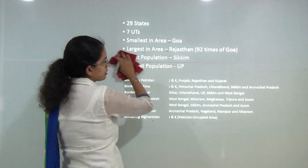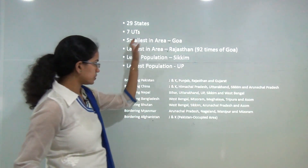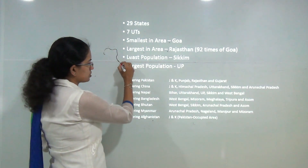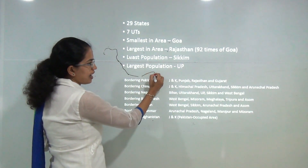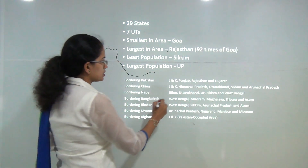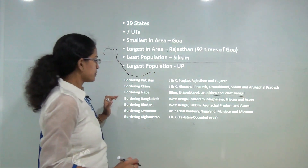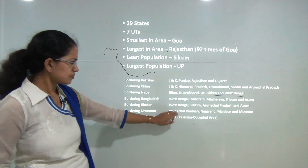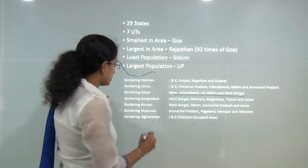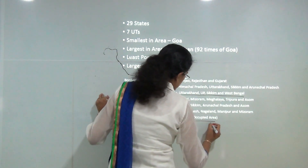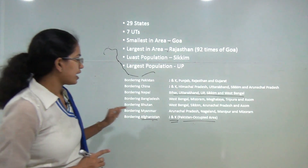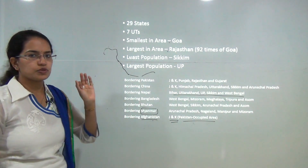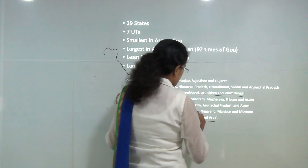Pakistan borders Jammu & Kashmir, Punjab, Rajasthan, and Gujarat. China borders Jammu & Kashmir, Himachal Pradesh, Uttarakhand, Sikkim, and Arunachal Pradesh. Nepal borders Uttarakhand, UP, Bihar, Sikkim, and West Bengal. Afghanistan borders Jammu & Kashmir in the Pakistan-occupied Kashmir region. In the northeast, Arunachal Pradesh, Nagaland, Manipur, and Mizoram share boundaries with Myanmar.